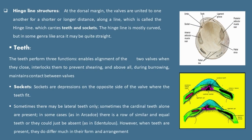The next point is hinged line structures. At the dorsal margin, the valves are united to one another for a shorter or longer distance along a line which is called the hinge line. The hinge line carries teeth and sockets. The hinge line is mostly curved, but in some genera like Arca, it may be quite straight. Now we will discuss about these two points: teeth and sockets.